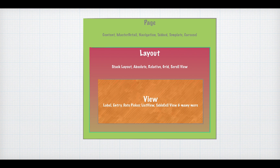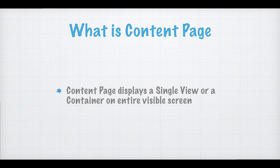So to summarize: the page is all the area you can see on the phone - consider it your room. The layout is how you want to structure and plan your things. The view is the actual items which you place either stacked or on the left or right side. There are many kinds of pages, and in this video we will talk about the content page.